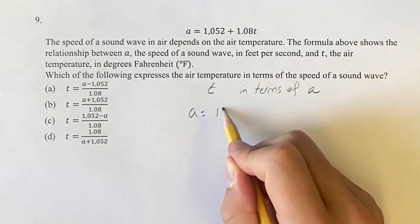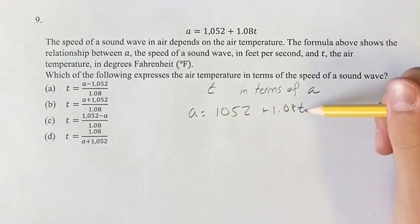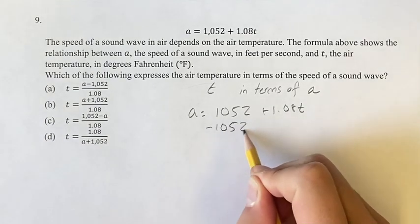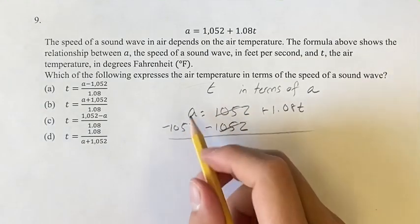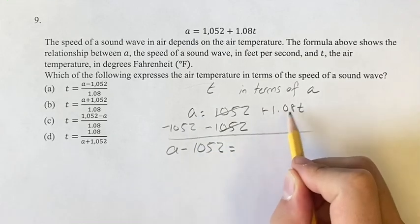So given our equation, A is equal to 1052 plus 1.08T, we want to get T on its own and have T equals something else in terms of A. So getting T on its own, we want to subtract 1052 from both sides, which will get these canceling, and we have A minus 1052 is equal to 1.08T.